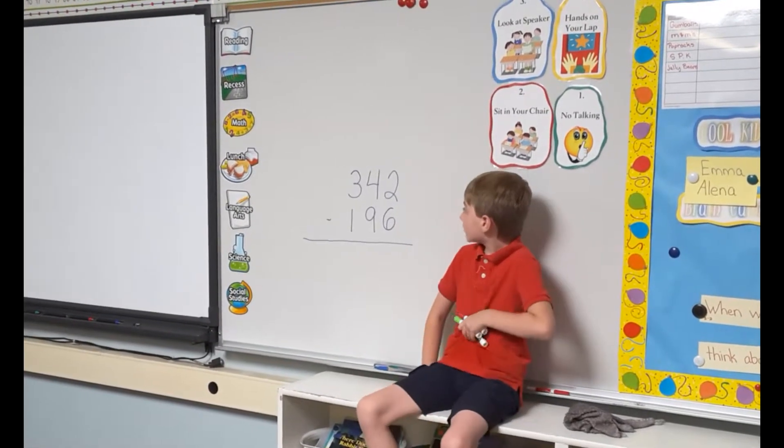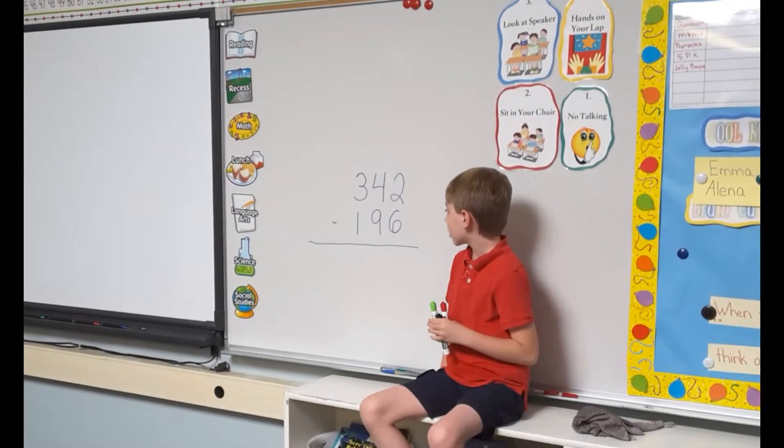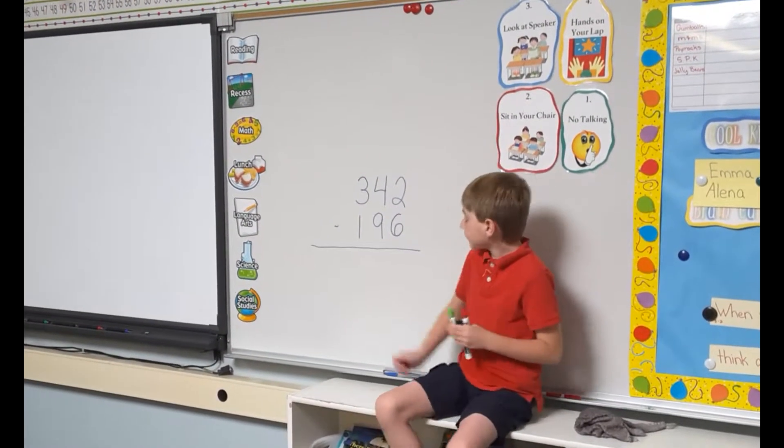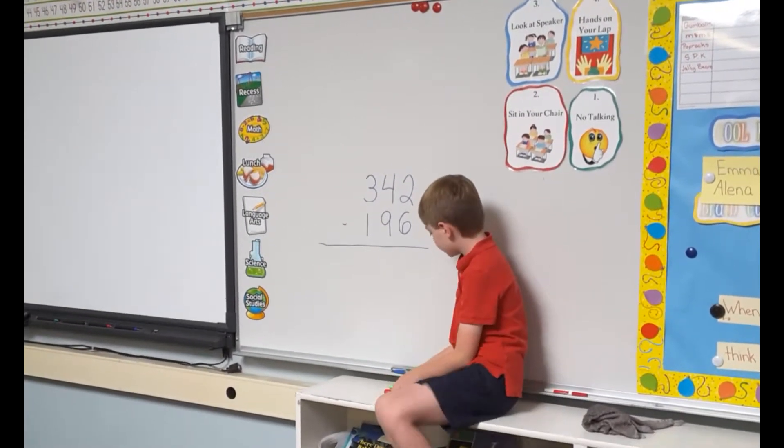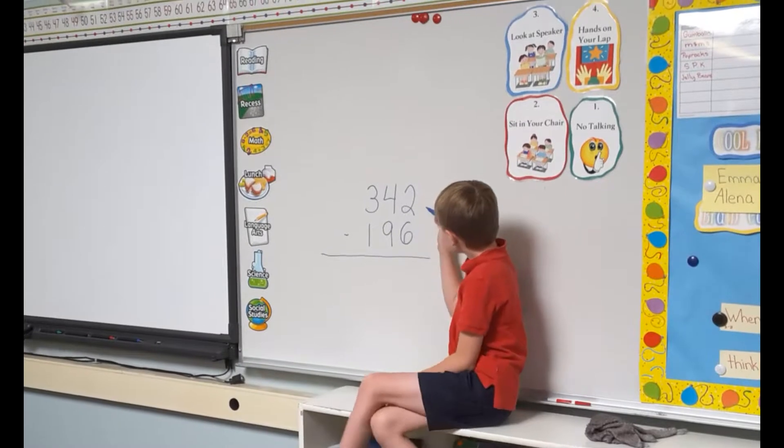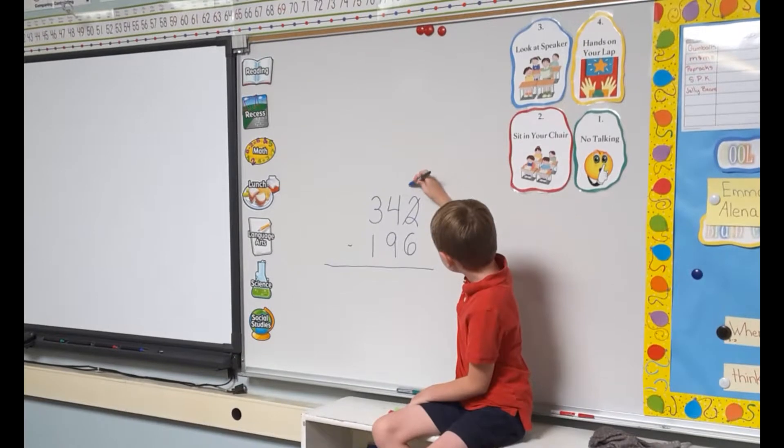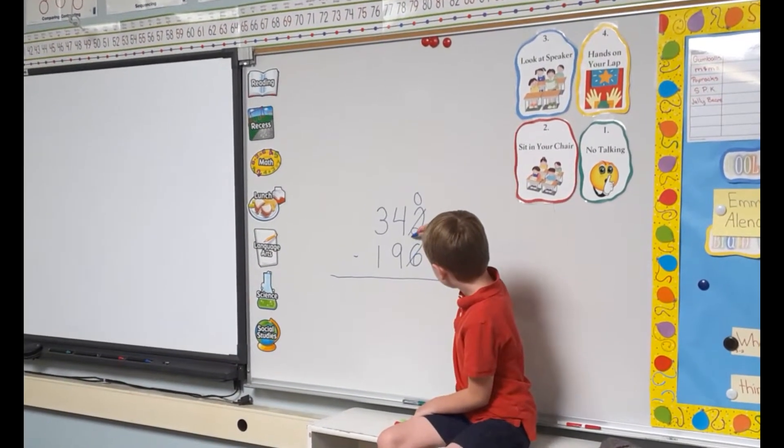We've got the problem 342 minus 196. The first thing I do would be to make the 2 a 0 and make the 6 a 4.